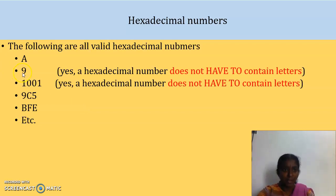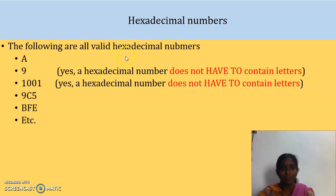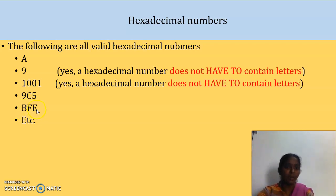You might ask whether 9 is a decimal — yes, of course it is a decimal number, but here it is also a valid hexadecimal number. We have to mention the base. The third example, 1001 — you may think it is a binary number, and it is, but it is also a hexadecimal number if the base 16 is given. A combination of letters and numbers is a hexadecimal number, and even a number consisting only of alphabets is also a hexadecimal number. These are all examples of hexadecimal numbers.